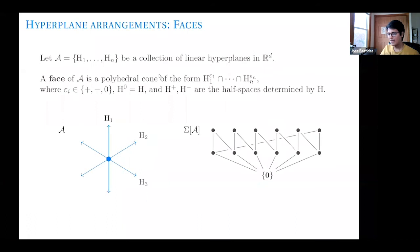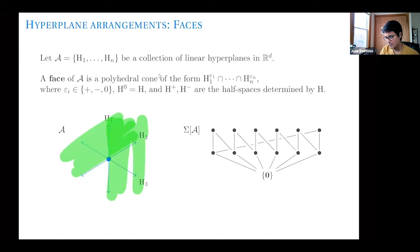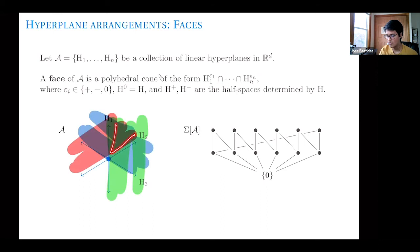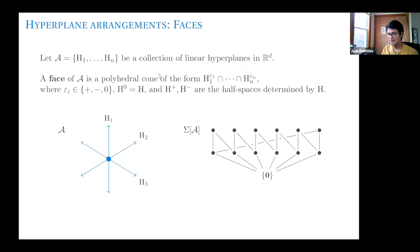The second thing to define is a face of an arrangement. To get a face, for every hyperplane I pick either the hyperplane itself or one of the two half-spaces it defines. For example, taking this side of H1, this side of H2, and this side of H3 — intersecting these three half-spaces gives a cone, which is an example of a face of the arrangement. Think of this as a normal fan: the normal cones are the faces of the arrangement. In this particular example, there are six full-dimensional faces and six rays.